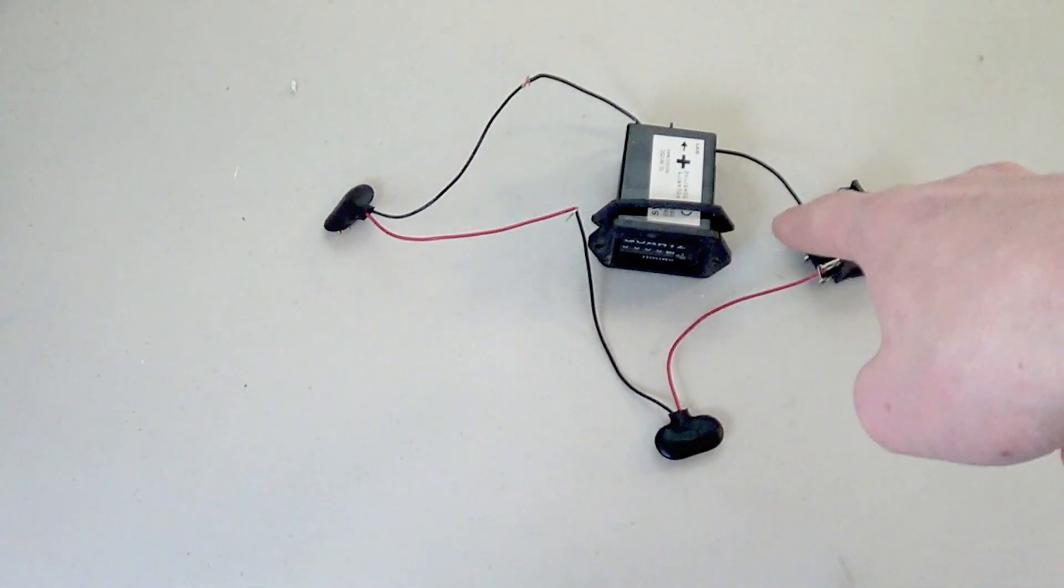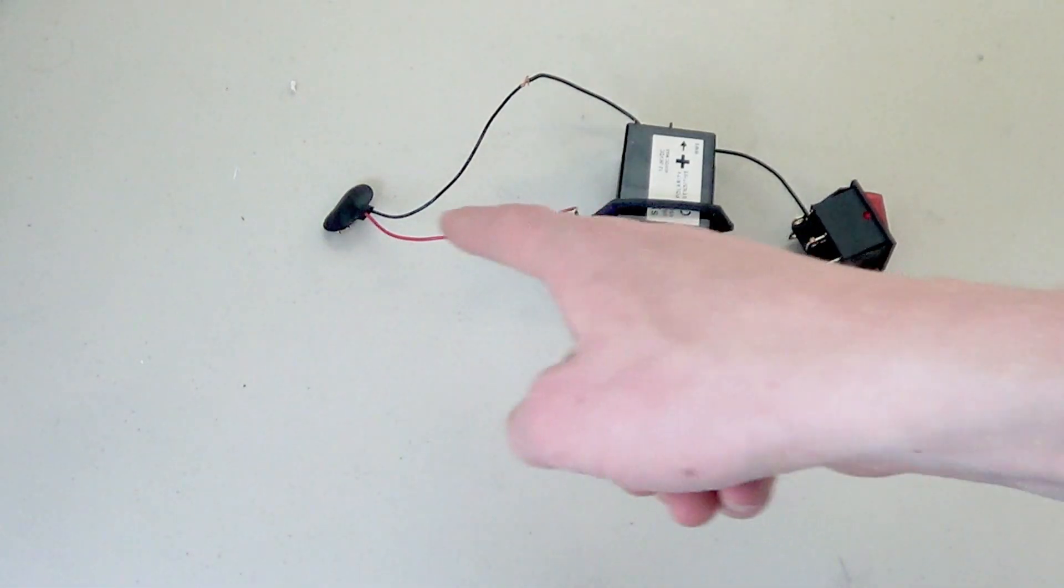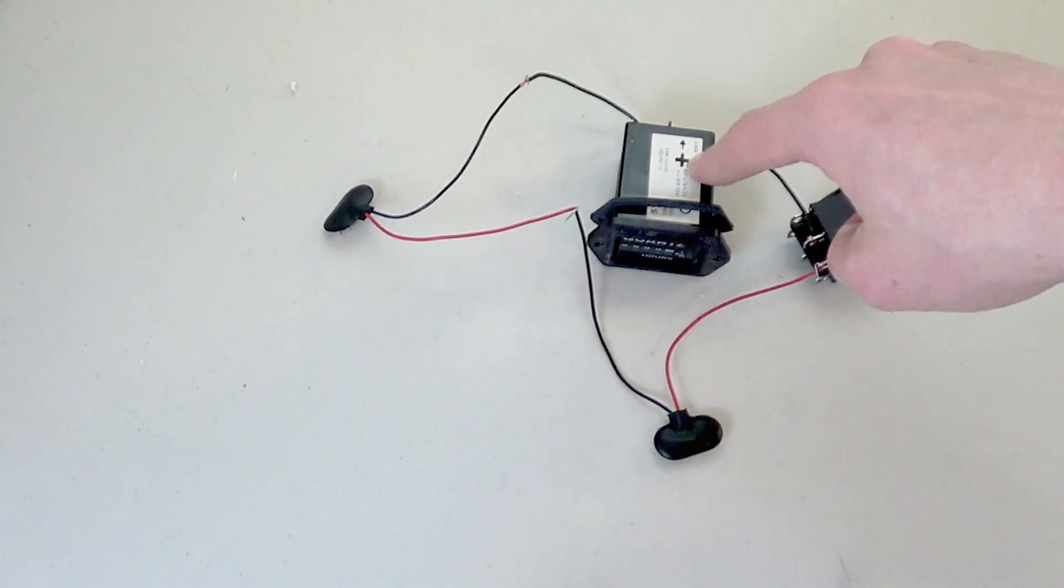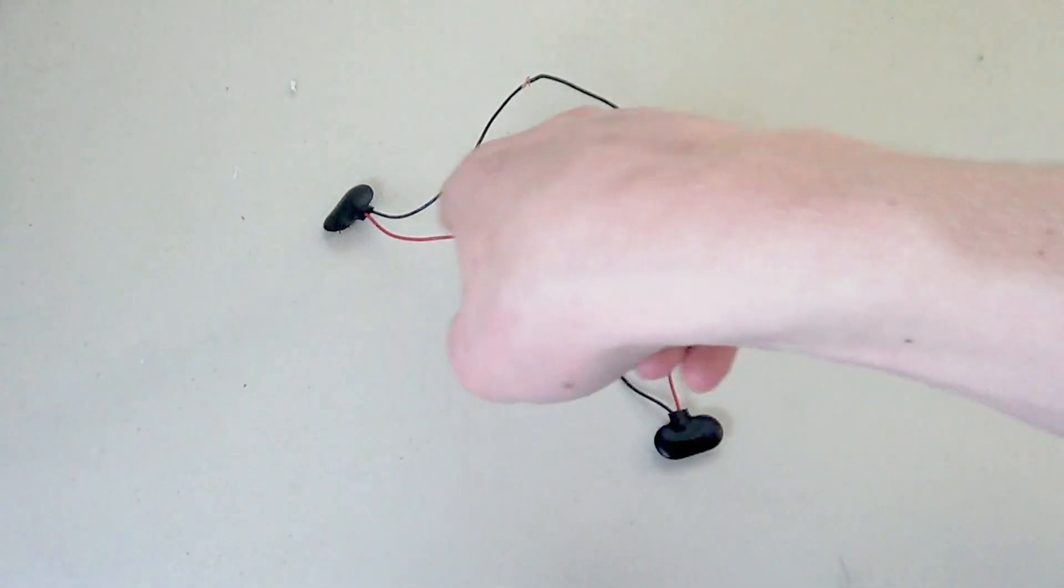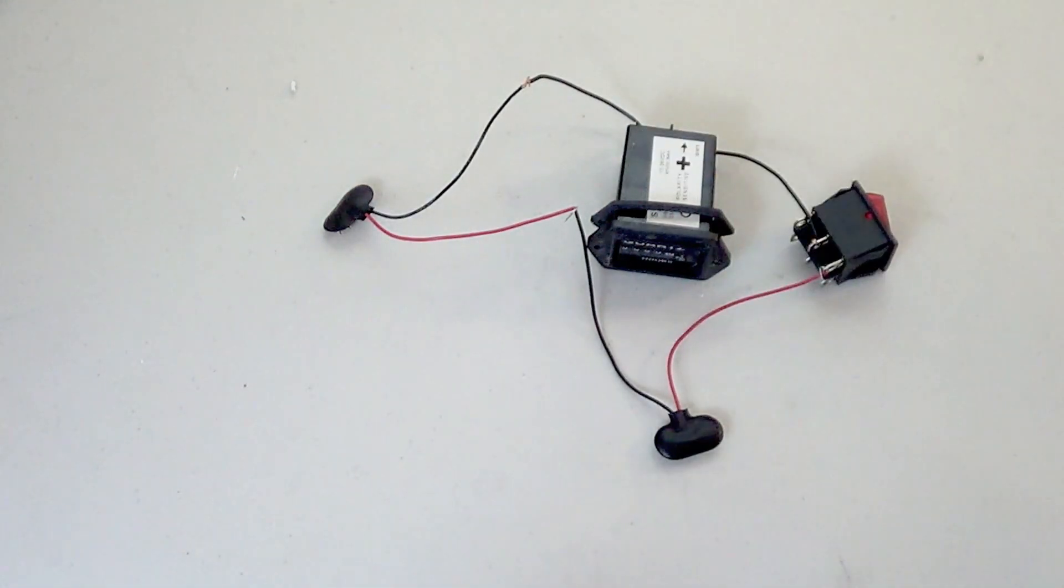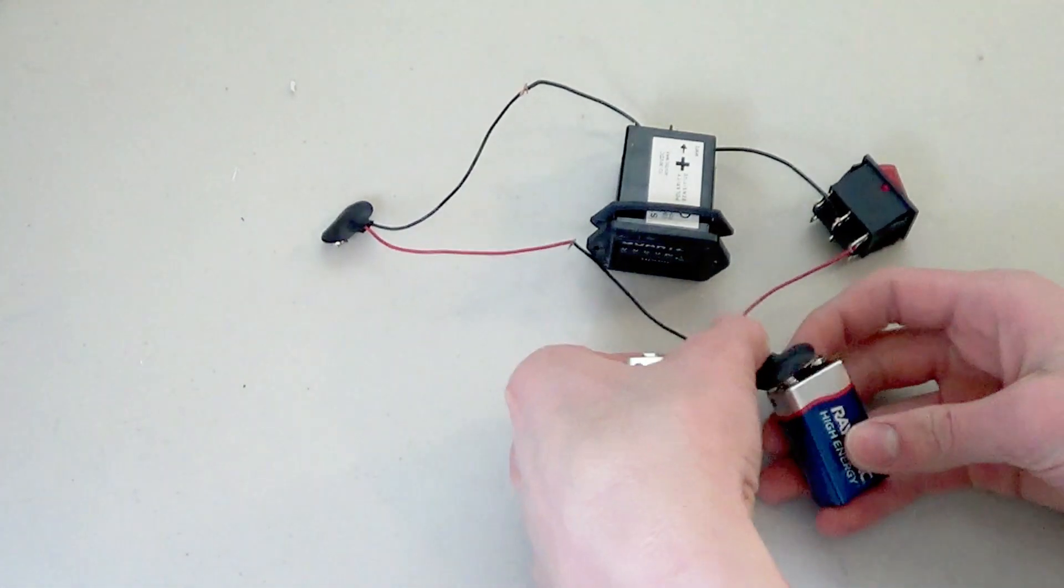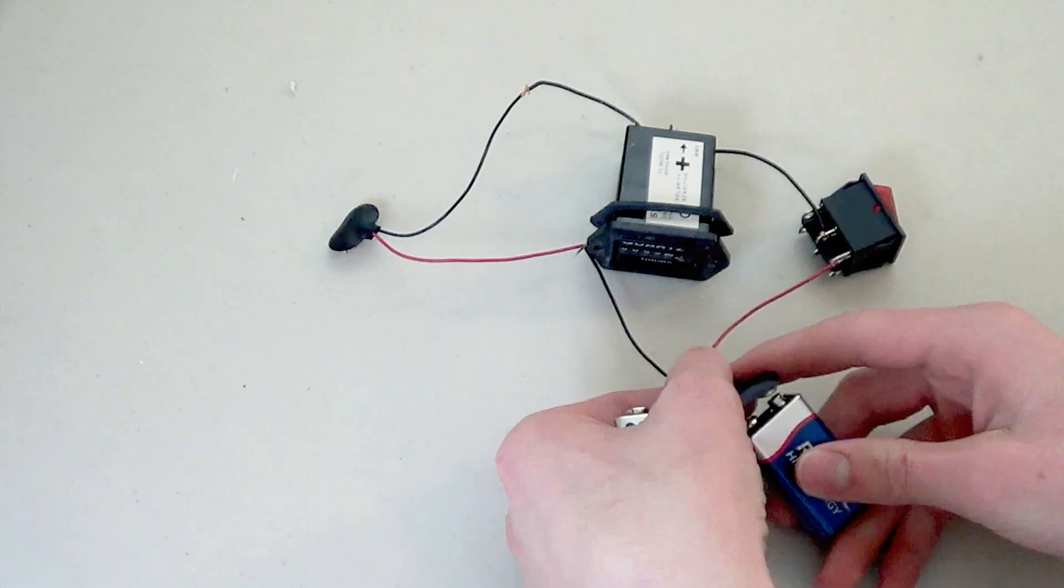This is what the wiring should look like. You'll notice that the positive wires feed into the positive side, and the negative wires feed into the negative side. The switch is currently off, and I can plug in these 9-volt batteries.